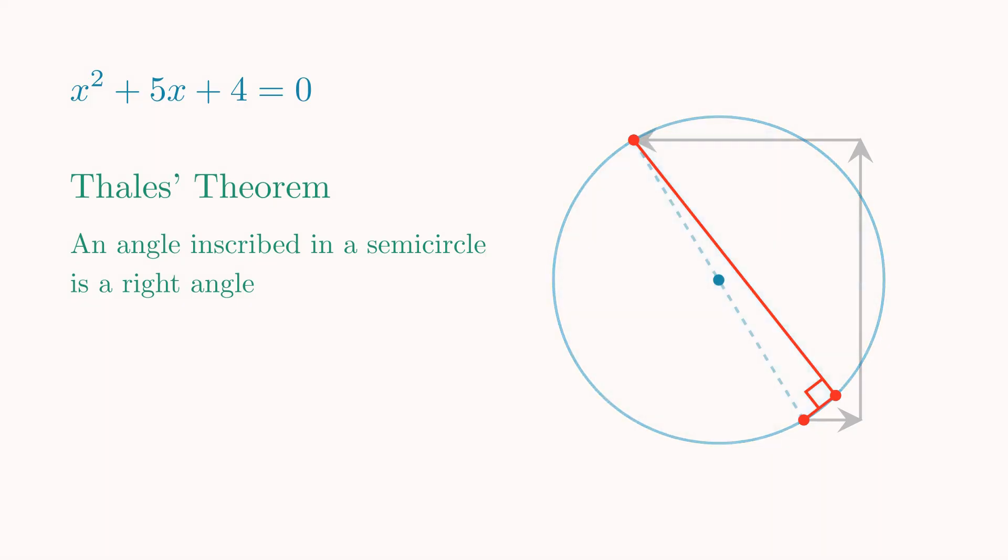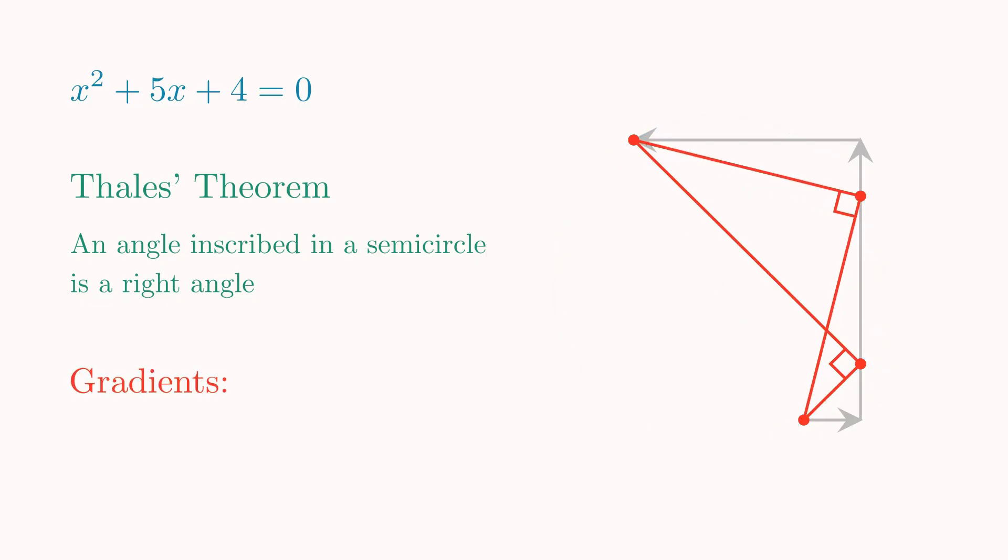The solutions we are after lie at the points where this circle intersects the second line of the Lill diagram, which, in this case, occur at gradients of 1 and 4. Of course, the solutions are the negative values of the gradient, so we get x equals minus 1 and x equals minus 4, which are both the roots of the original equation.